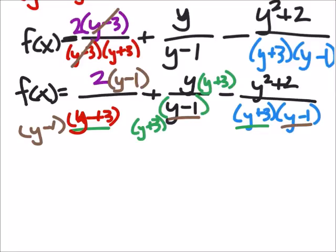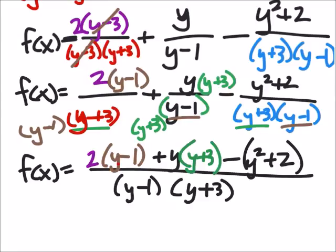So now that I have common denominators in all three terms I can rewrite this. And here's my new function. So all I need to do is simplify the numerator there. So what I'm going to do is distribute the 2 and the y into their respective parentheses.